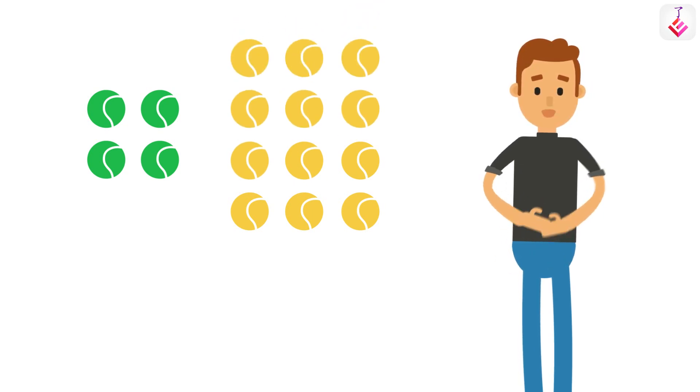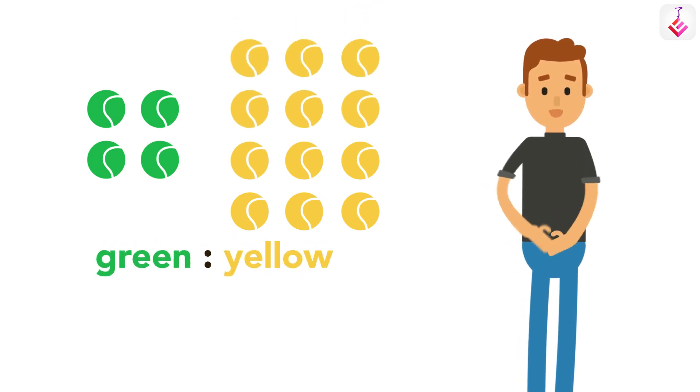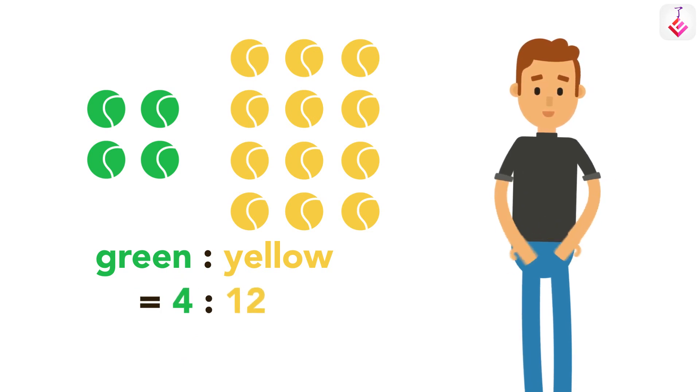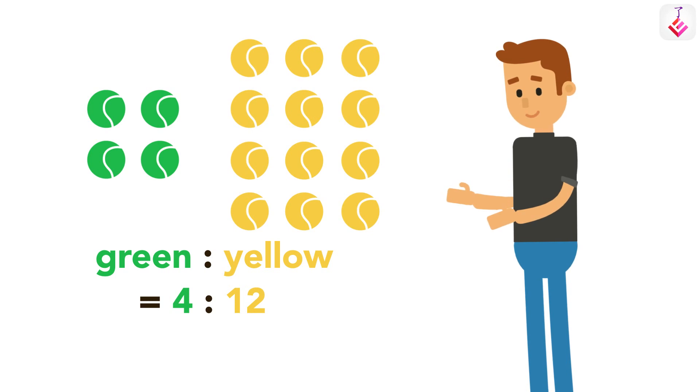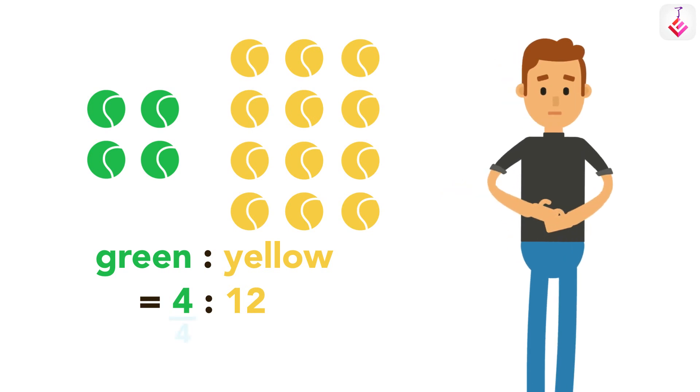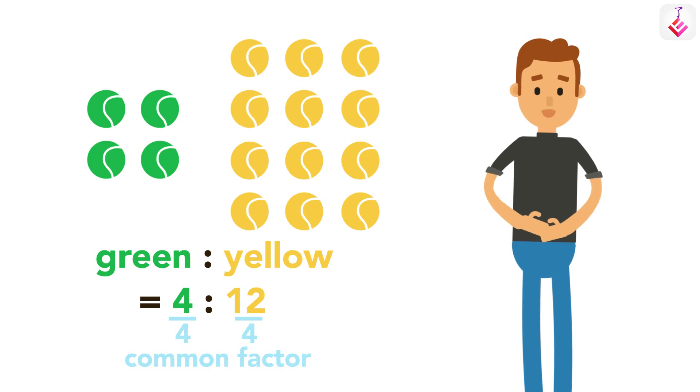So green to yellow equals four to twelve. Now we need to cancel the ratio to its simplest form. For that, we need to divide both sides by a common factor, which is four. So the final ratio is one to three.